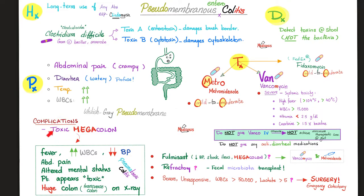The patient appears toxic, with a huge colon on abdominal imaging. How can we diagnose it? By detecting the toxin in the stool — not the bacteria. Toxin A is the enterotoxin and Toxin B is the cytotoxin, detected in a fresh stool sample.